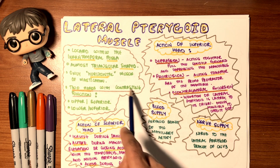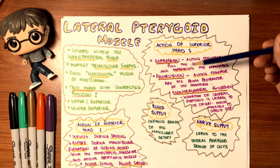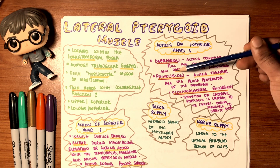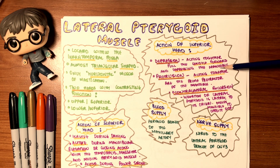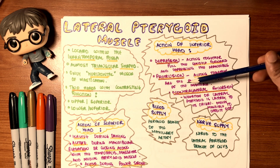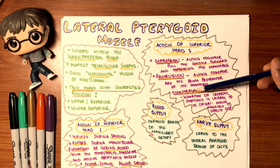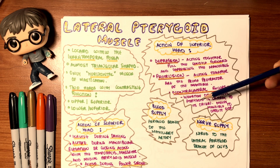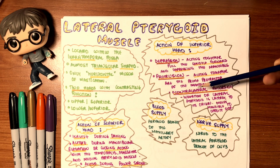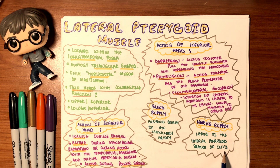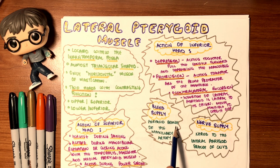The inferior head allows depression and protrusion. For depression, both inferior heads act together to pull the condyle forward and depress the mandible. For protrusion, they are the prime protractors of the mandible. The lateral pterygoid has contralateral excursion because its insertion is lateral to its origin. Nerve supply is the trigeminal mandibular nerve; blood supply is the pterygoid branch of the maxillary artery.